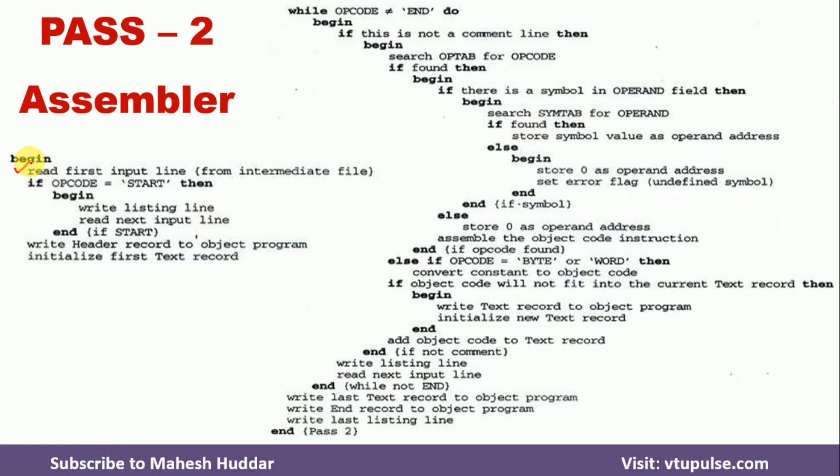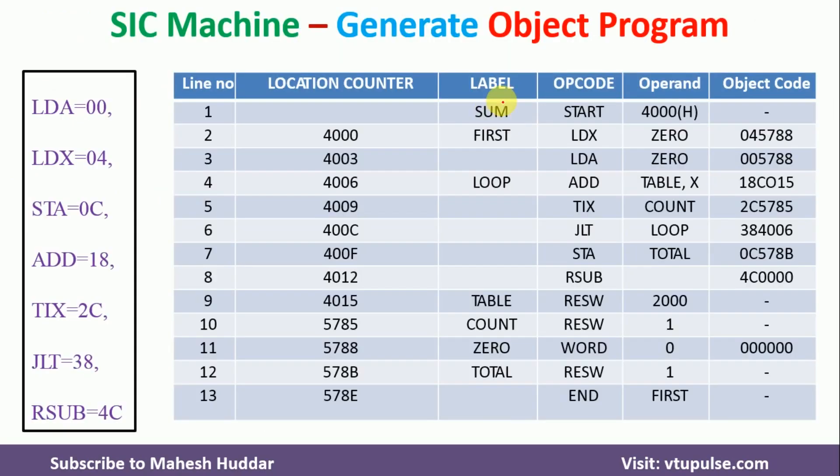This is the pseudocode of the 2-pass assembler — specifically the pass2 assembler. In pass2 assembler, the very first thing we do is read the first line from the intermediate file, because in pass1 the assembler reads the source assembly program and converts it into an intermediate file. So we read the first line from the intermediate file. Once we read it, we check what value is present in the opcode field — whether it is START or not.